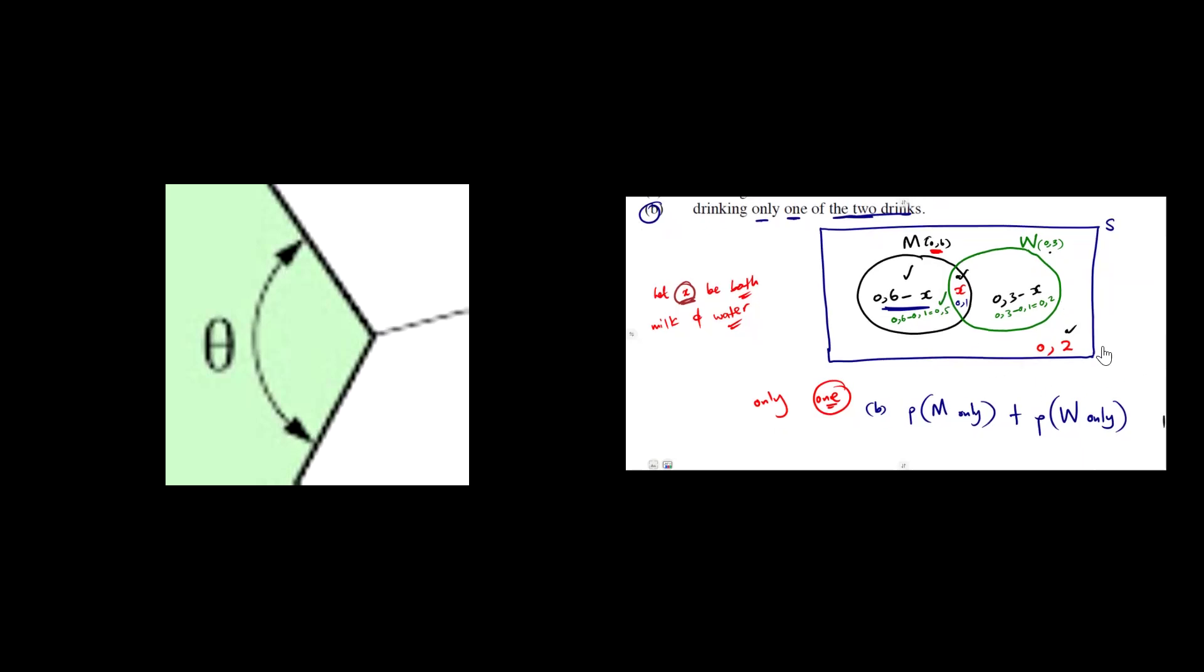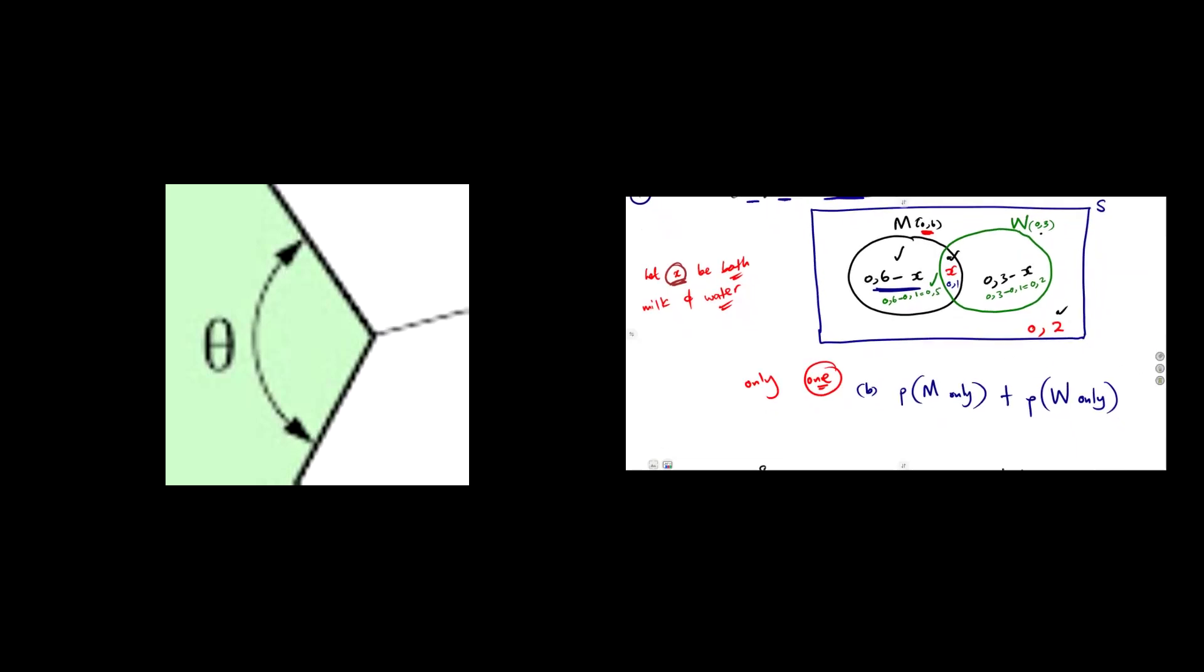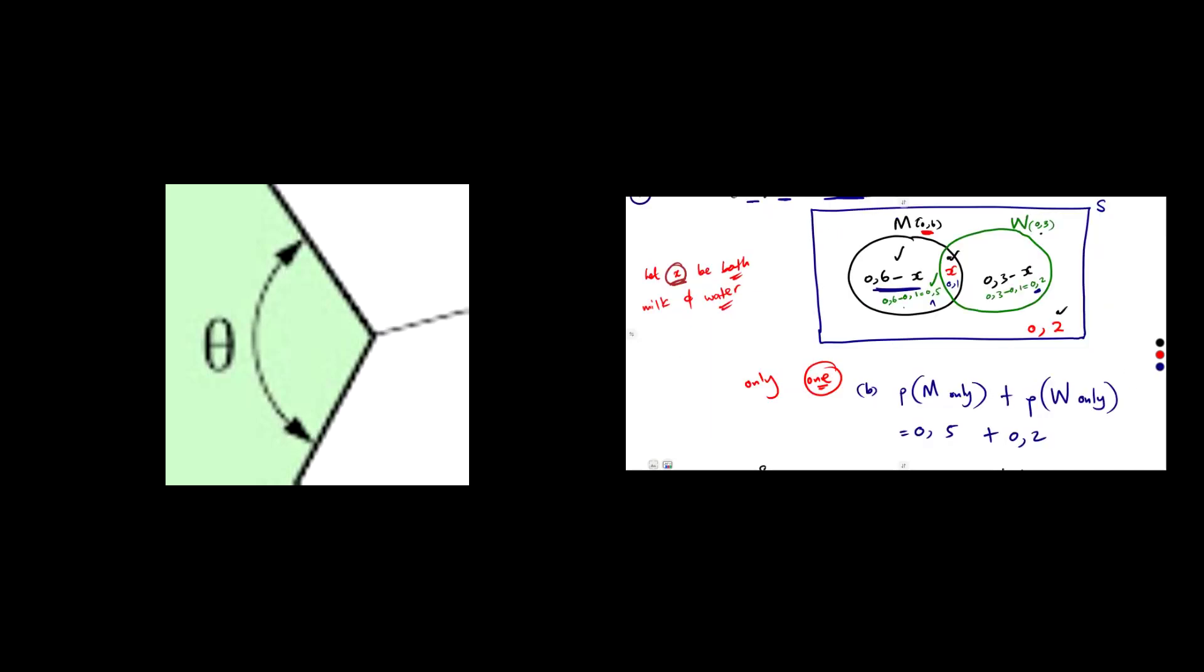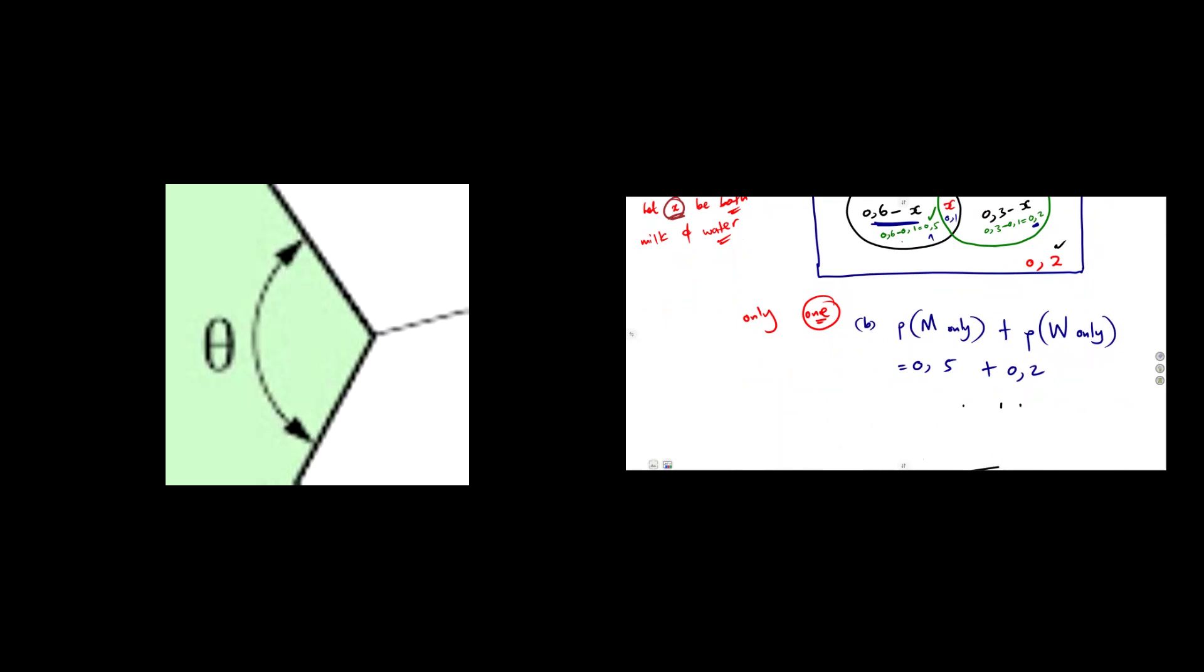So you're going to add 0.5 plus 0.2. The only part. A only, B only. Only one of the two. You add them together. So that's going to give us 0.7. So this is 0.7. That is how these questions can be given.